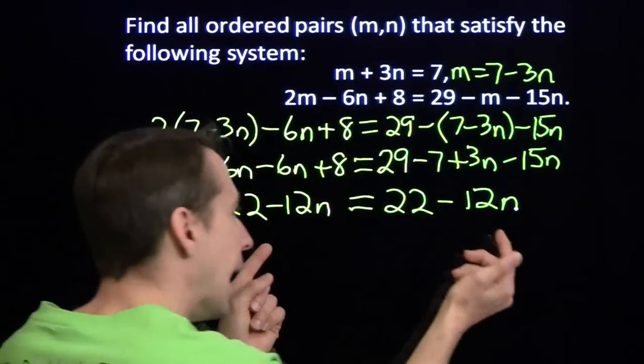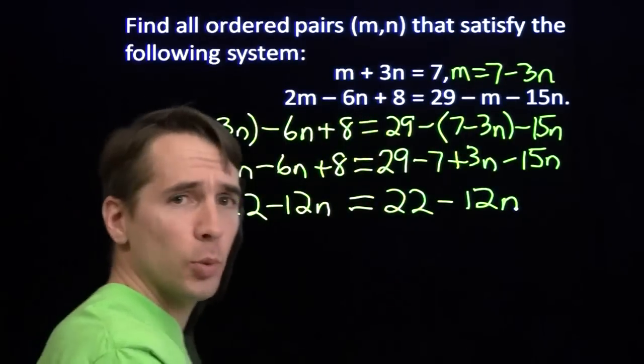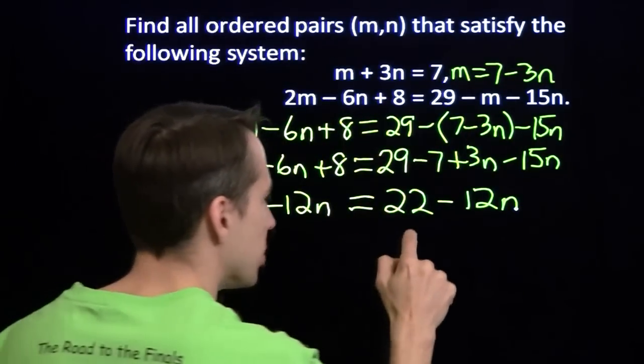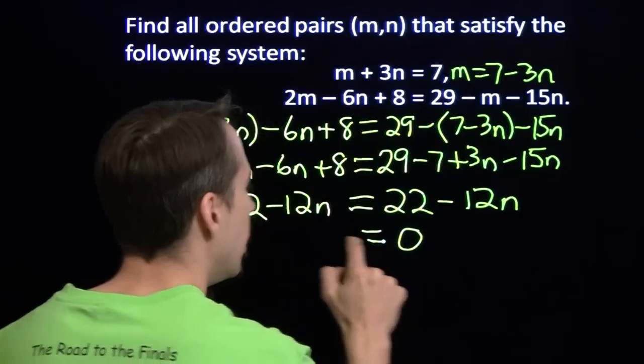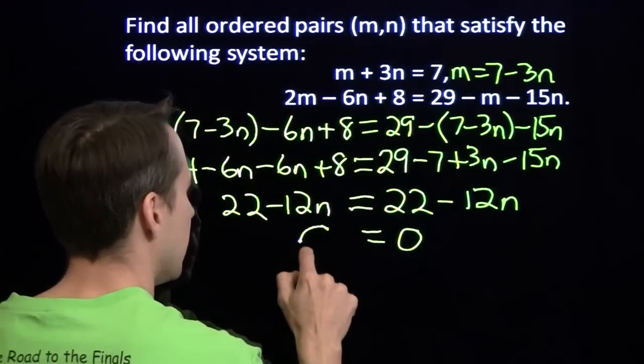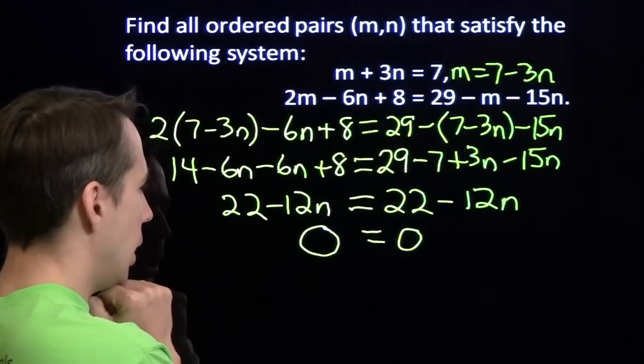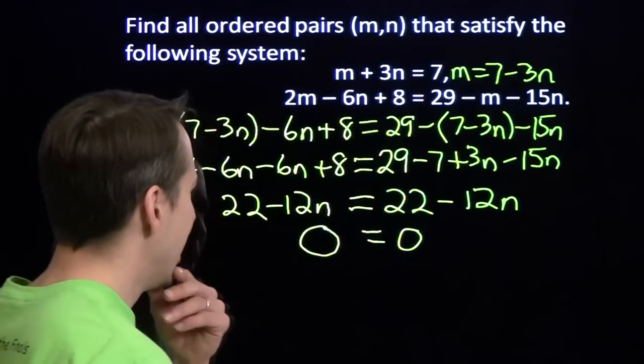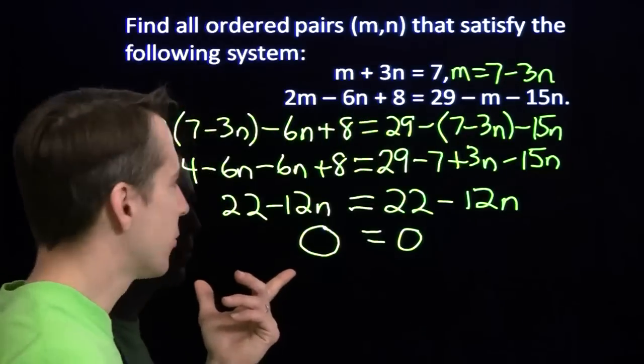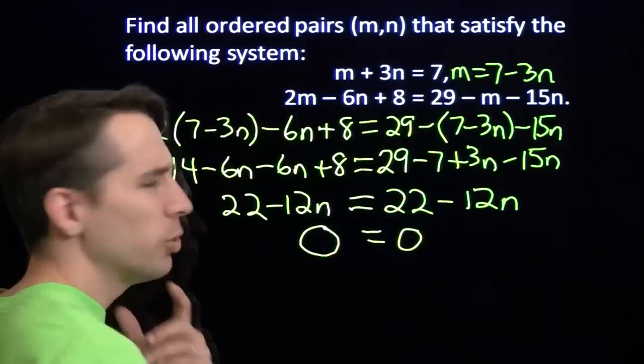Let's bring all the variables over here. We'll add 12n to both sides. We'll subtract 22 from both sides. 22 minus 22 gives us 0 over there. Minus 12n plus the 12n gives us another 0. I mean, 0 does equal 0, that's good, but I can't tell what n is from this. What do I do?